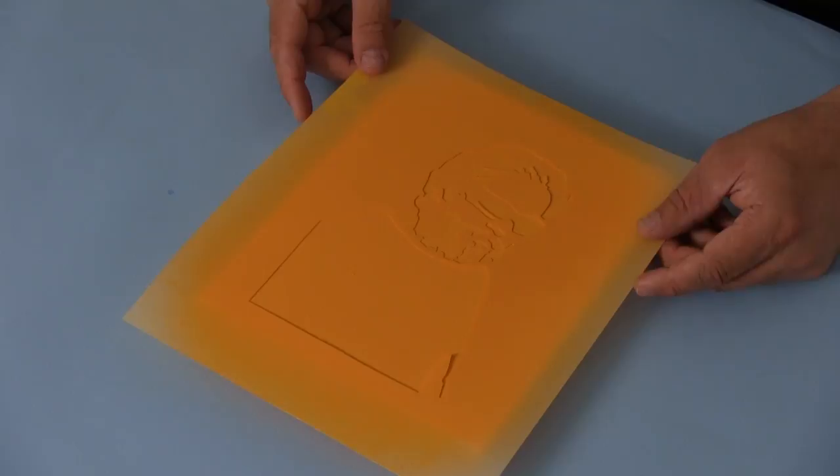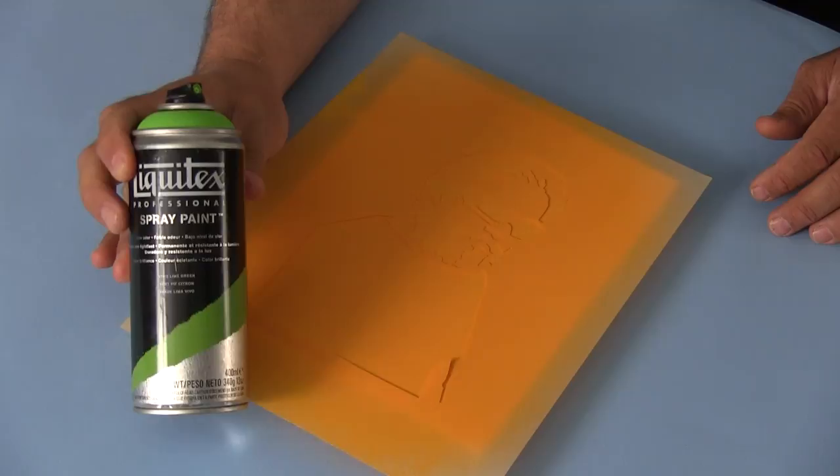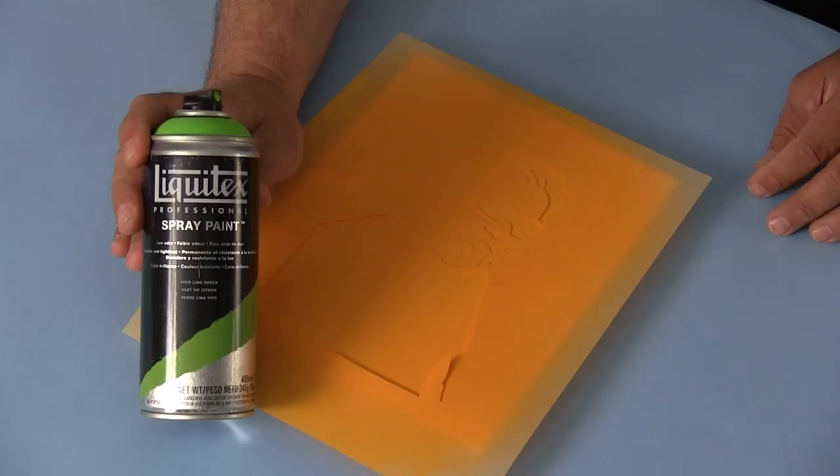Now I'm going to use a pre-cut stencil and I'm going to lay it right on top of my colored canvas. I'm going to take a contrasting color of Liquitex spray paint, in this case Vivid Lime Green, and I'm going to give it a quick spray.